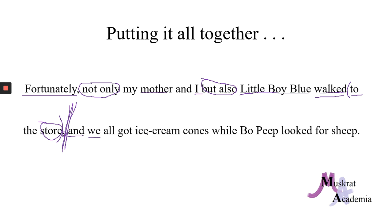In the second independent clause: we all got ice cream cones while Bo Peep looked for sheep. Looked is our verb in the second part. For sheep is a prepositional phrase — for is the preposition, and sheep is the noun of the preposition. Got is our verb in we all got. This is not completely diagrammed, but from what you know, this should make sense. In later videos, we'll go more into how you make sentences and put them together and what all the clauses mean. But for now, if you could just understand the basics of pulling a sentence apart and identifying these major parts of speech, that would be great. One last note: and here is also a conjunction, even though it's just joining mother and I — that is a good definition of a conjunction and another example.